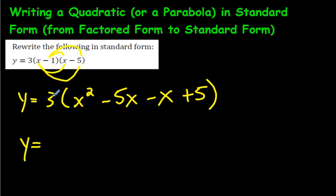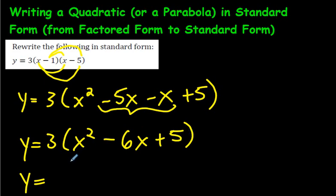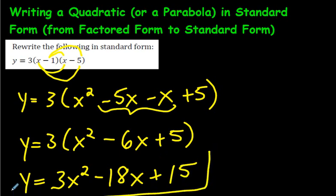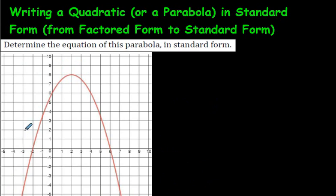Continuing: negative 1 times x is negative x, and negative 1 times negative 5 is positive 5 — two negatives make a positive. We have two like terms: negative 5x and negative x give us negative 6x. So inside the brackets we have x squared minus 6x plus 5. Now we distribute the 3: 3 times x squared is 3x squared, 3 times negative 6x is negative 18x, and 3 times 5 is 15.